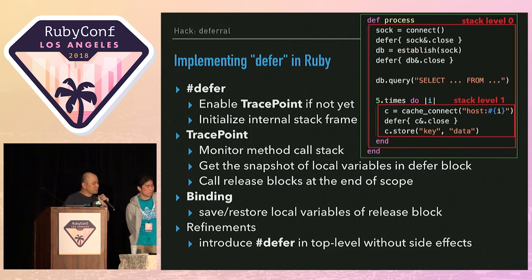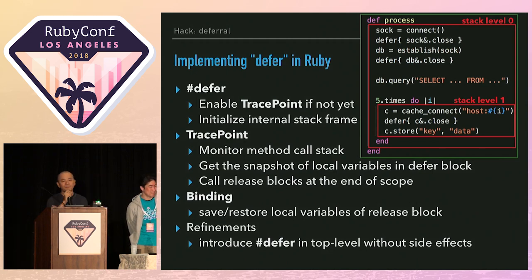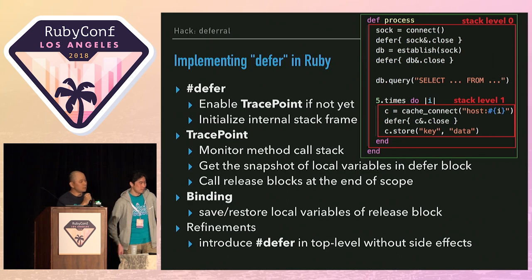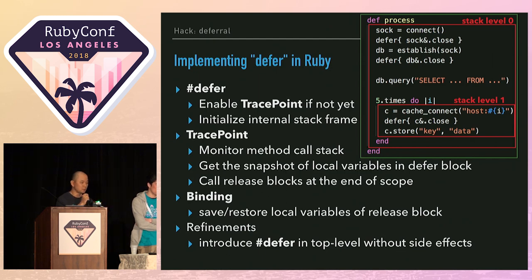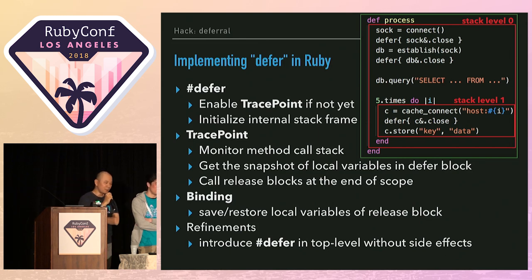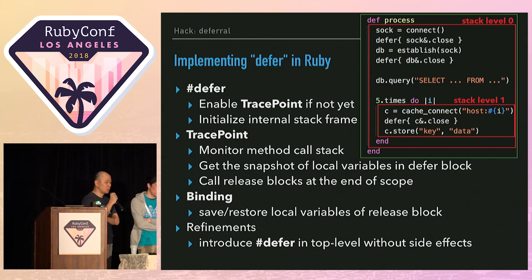So I created the defer gem using refinements to introduce a top-level defer method. The sample code looks very similar to defer in Golang. Of course I use TracePoint — defer method enables TracePoint if not yet enabled, and it initializes an internal stack frame. Defer manages when resources should be released using its own internal stack frame, the TracePoint monitors the method call stack, it gets a snapshot of local variables in the defer block, calls the release block at the end of scope, and also uses binding to store and restore the set of local variables of the release block. It also uses refinements to introduce the top-level defer method without any side effects.